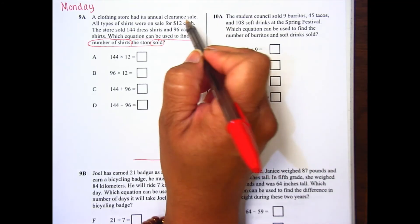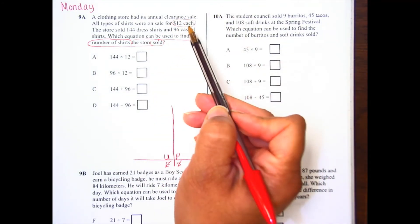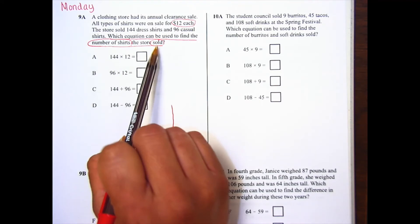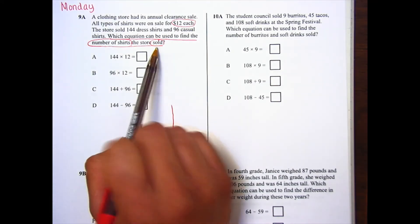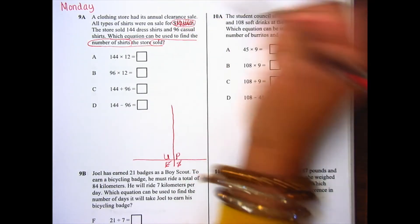Let's look at our information. The shirts were on sale for $12 each. So is this going to help me solve for the number of shirts that I sold? No, because it's just telling me how much they cost. That's trash. I'm going to cross it out.